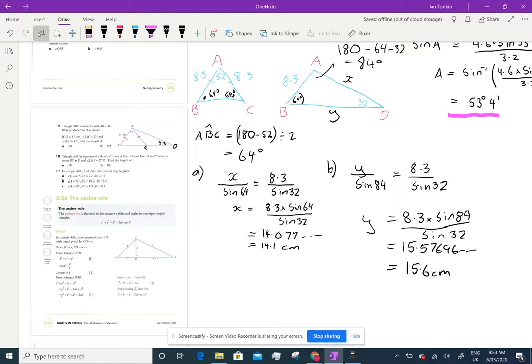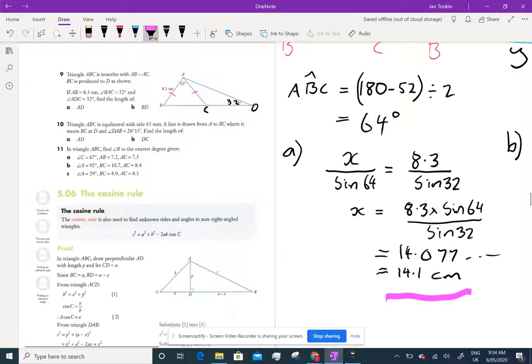Okay, if you use the 14.1 over sine 64 instead of that, you would have got a slightly different answer, but you would have been close. So if you ever get that opportunity where you're going to use a rounded answer, you will get some sort of rounded error, compound error.